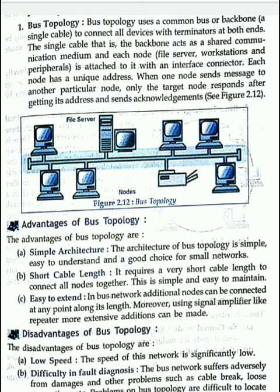What is the advantage and disadvantage of bus topology? The simple architecture means that if you add a node to the backbone, it can simply be added. There is no headache — just add the node and the address will be added. Short cables, easy to extend.